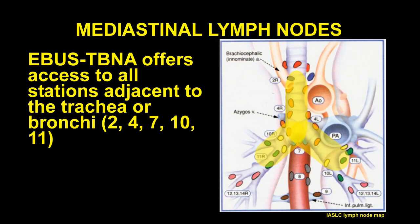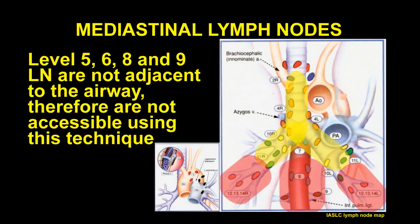EBUS TBNA offers access to all stations adjacent to the trachea or bronchi. These stations are station 2, 4, 7, 10, and 11. Levels 5, 6, 8, and 9 lymph nodes are not adjacent to the airway and therefore are not accessible using this technique. Stations 5 and 6 can be approached through anterior mediastinoscopy or thoracoscopy, and stations 8 and 9 can be accessed via endoscopic ultrasound or thoracoscopy.